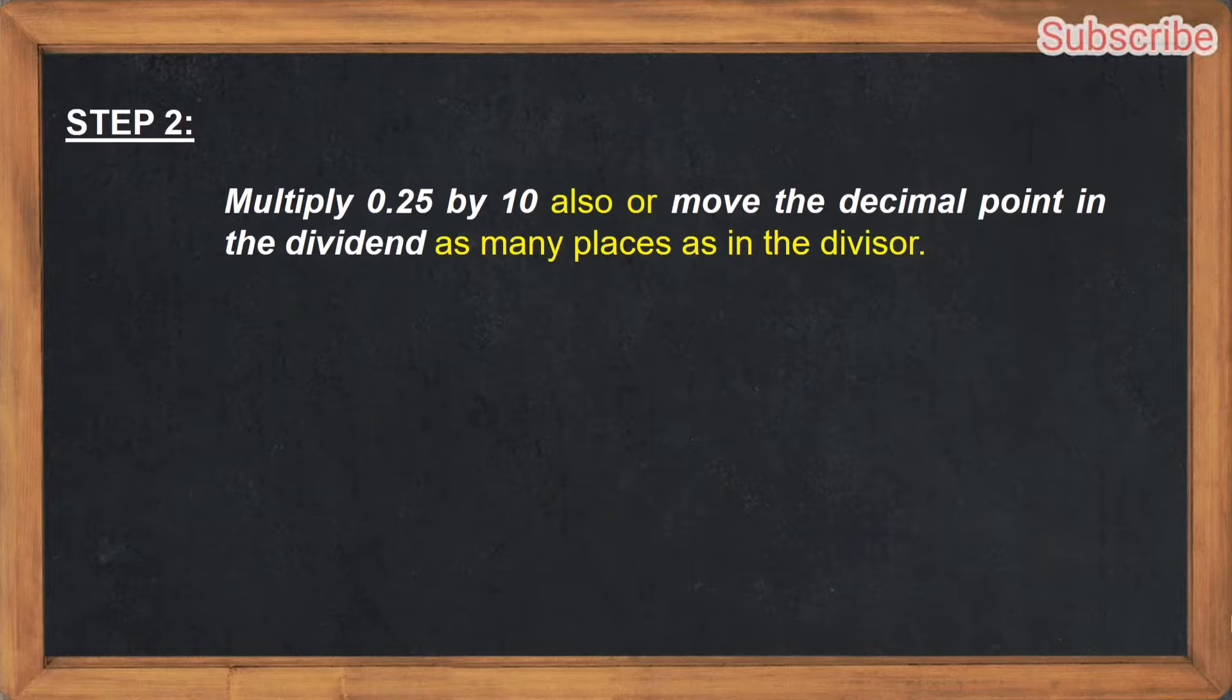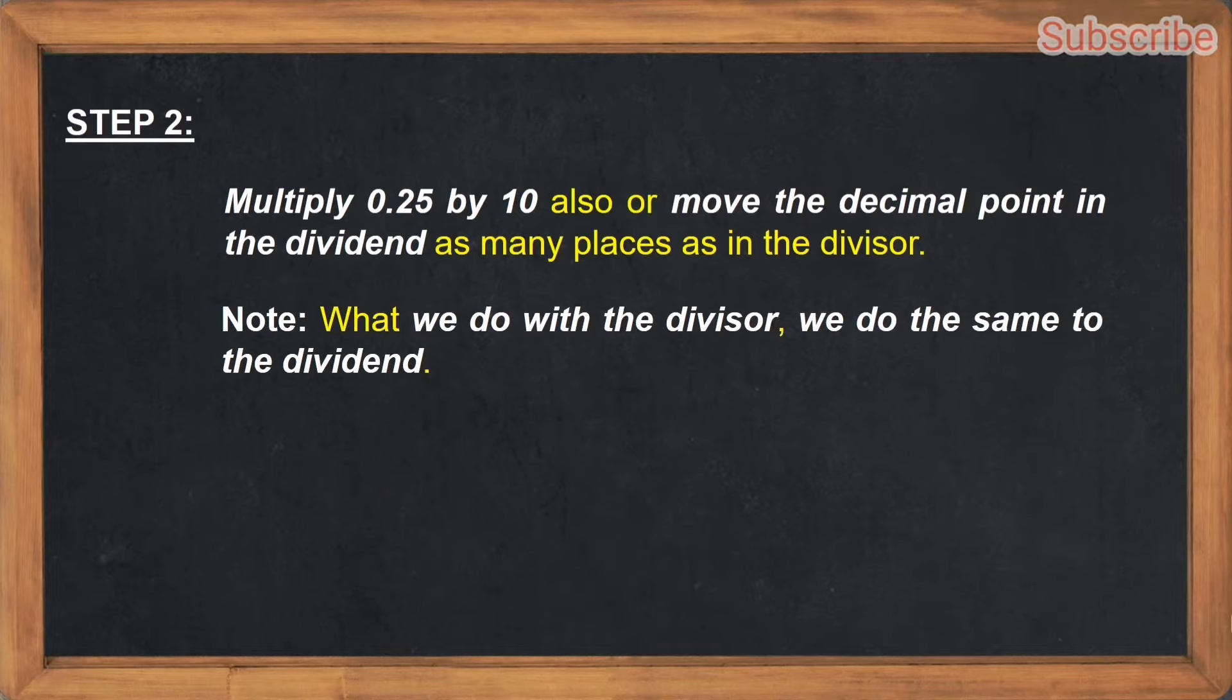And for step number two, multiply 0.25 by 10 also, or move the decimal point in the dividend as many places as in the divisor. Remember that whatever we do to the divisor, we must also do to the dividend.